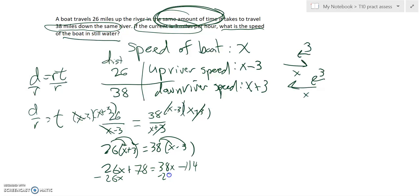Subtract 26X from both sides. And I end up with 78 equals 12X minus 114. Add 114 to both sides. I get 192. And then I'm going to divide that by that 12.